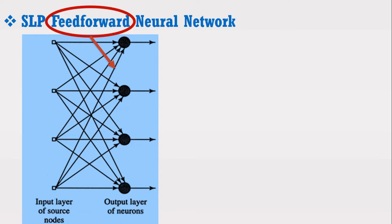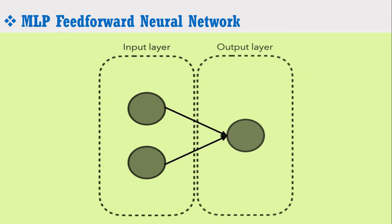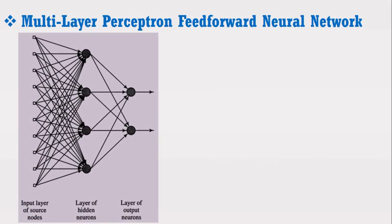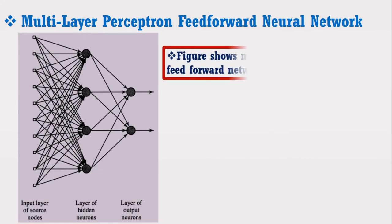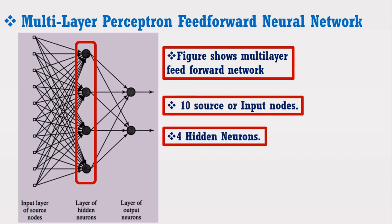When a single layer is not able to give accurate results, the next step is to increase the number of layers. Such a network is known as a multi-layer perceptron feed-forward neural network. In this network, one or more hidden layers are used to get accurate results. It consists of an input layer of source neurons, at least one middle or hidden layer of computational neurons, and an output layer of computational neurons. Input signals propagate in the forward direction layer by layer. For example, a network may have 10 source nodes, 4 hidden neurons, and 2 output neurons.